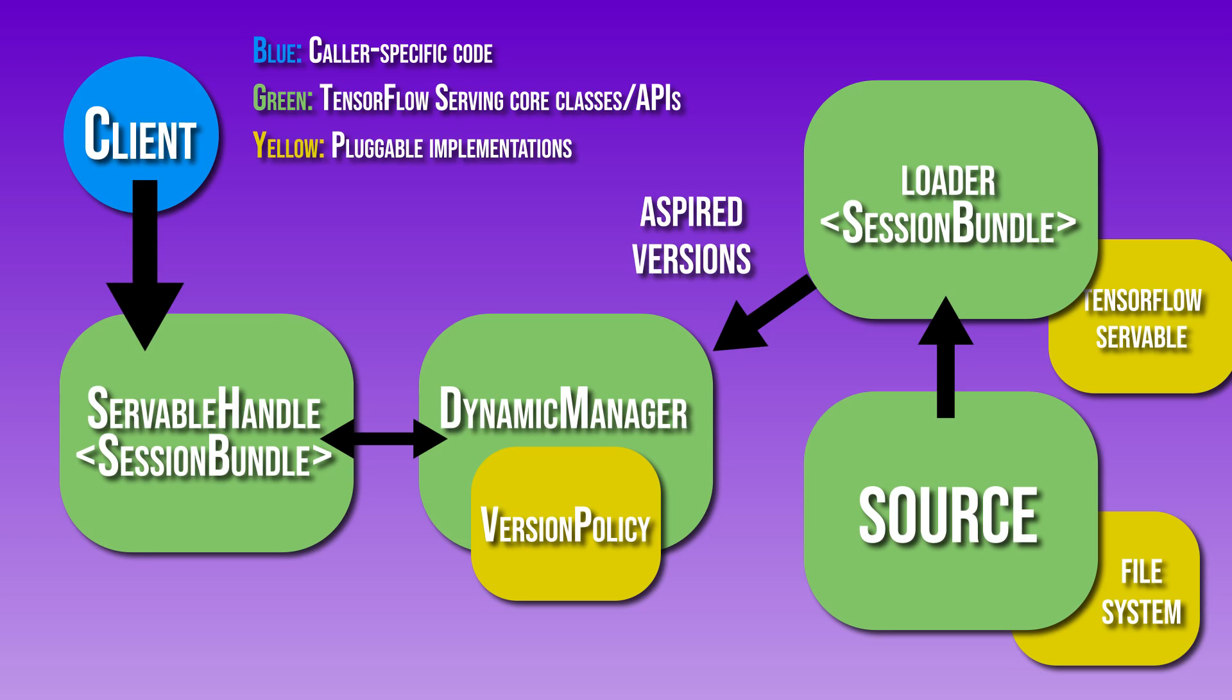The source will notify the dynamic manager of the new version of the model. This dynamic manager checks with whatever version policy you've chosen and decides to load the new version. The dynamic manager will then tell the loader that there's enough in memory. It will then instantiate the TensorFlow graph with all the new weight file values. A client can then request a handle to the latest version of the model and the dynamic manager will return a handle to the new version of the servable.